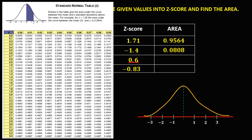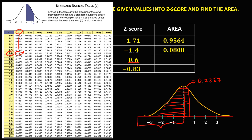For Z-score 0.6, looking up 0.6 with 0 in the second decimal gives an area of 0.2257. Since this is positive, we are looking for the right-side area. Half of the curve is 0.5, so we add 0.2257, giving a total area of 0.7257.